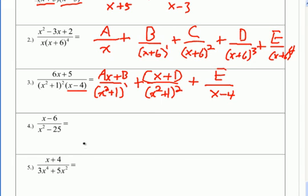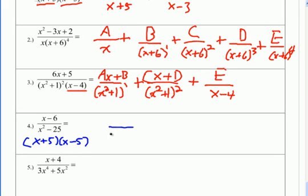Number 4 is the first time I have a denominator that's not factored. Let's factor it: x squared minus 25 is a difference of two squares, giving x plus 5 times x minus 5. Two distinct linear factors each get their own fraction — x plus 5 and x minus 5. Since they're linear, I put a constant on top: a and b.